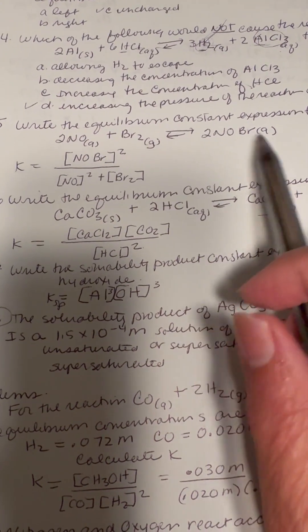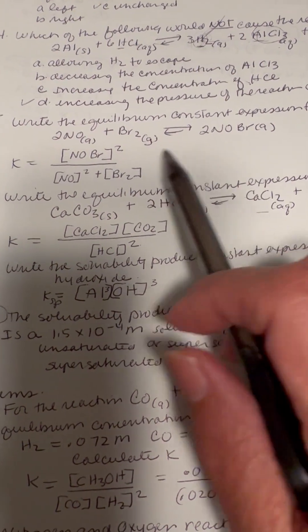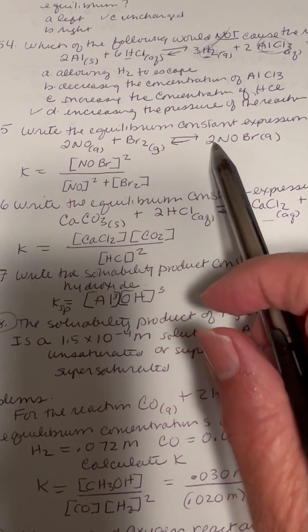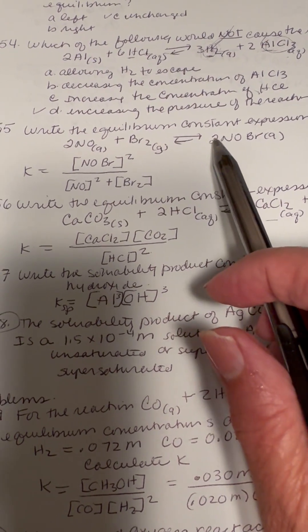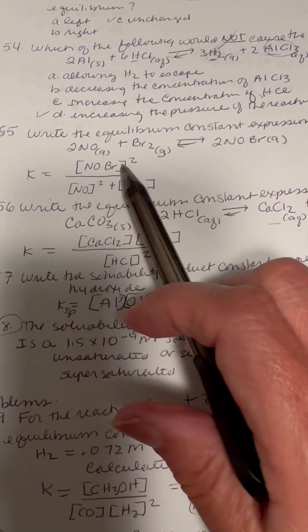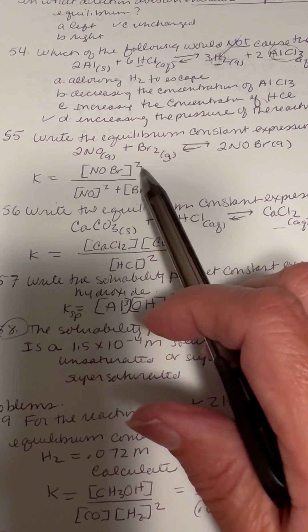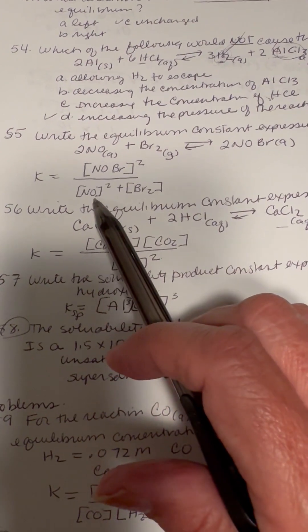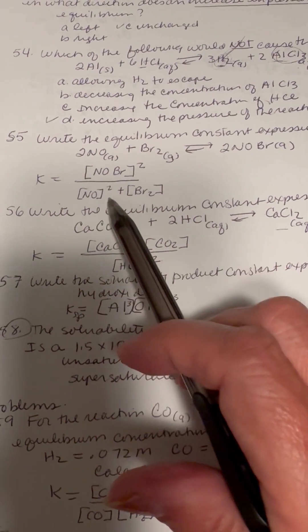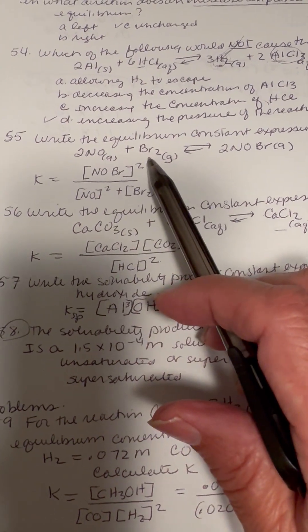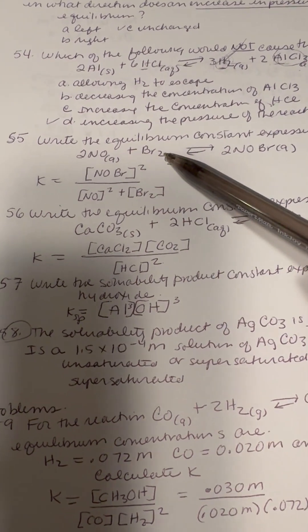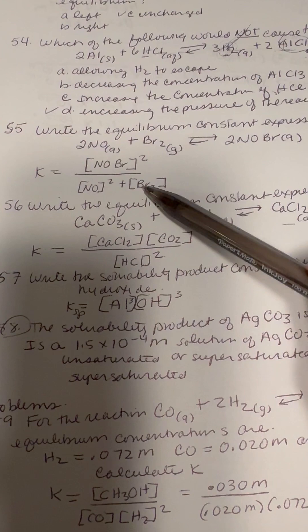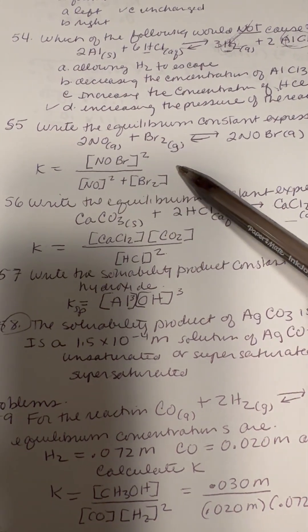As long as there are no solids — these are all gases, so we can include them all. We're going to put NOBr in the numerator; there are two moles, so that becomes the exponent — NOBr squared. Then in the denominator, we put NO with an exponent of two, and Br₂ with no coefficient, so just Br₂. Here's the final formula for number 55.